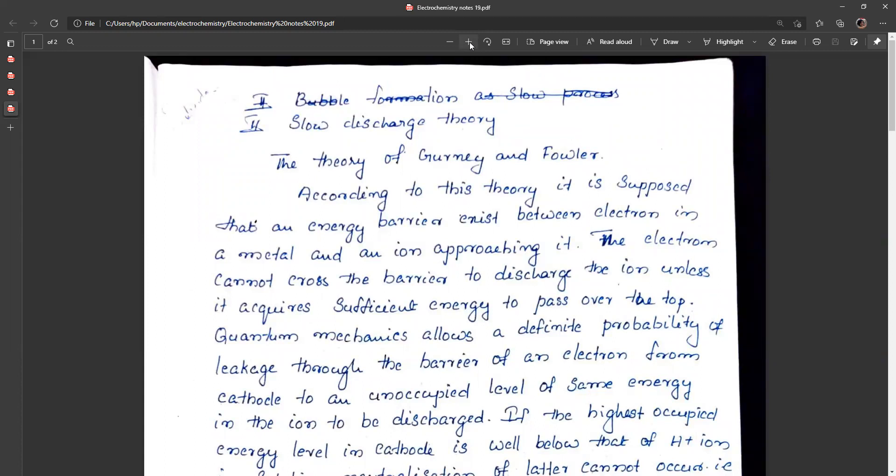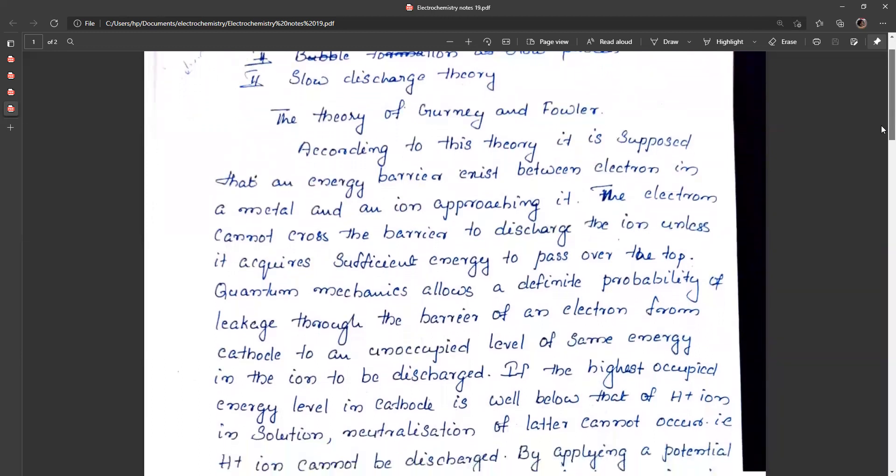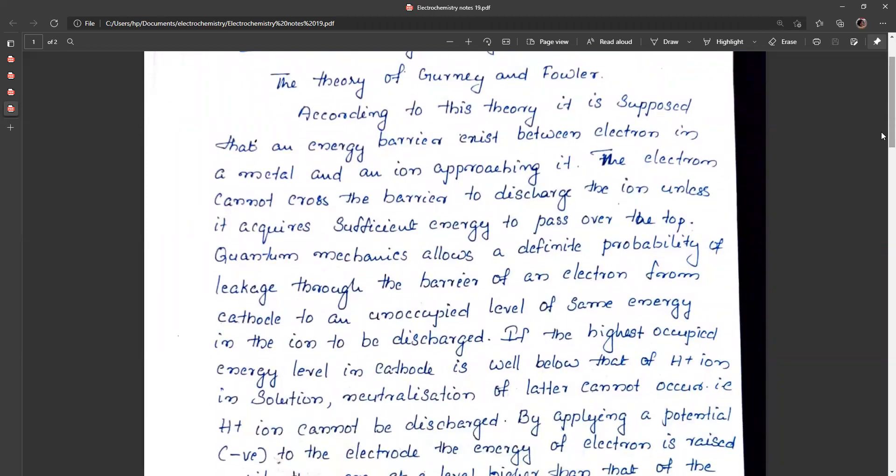According to this theory, there exists an energy barrier between an electron in a metal and an ion approaching it. The electron cannot cross this barrier to discharge the ion unless it acquires sufficient energy to pass over the top. However, quantum mechanics allows some leakage through the barrier of an electron from cathode to an unoccupied level of same energy in the ion to be discharged.